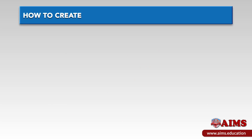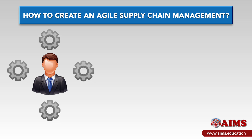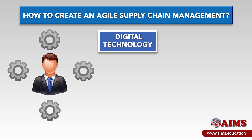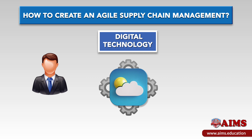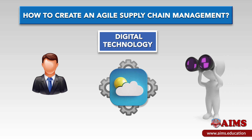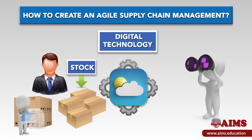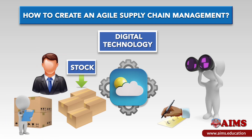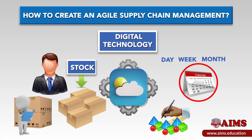How to create an agile supply chain management? You will need to incorporate all the latest tracking techniques provided by digital technology and combine it with forecasts of future demands. This means focusing on what you have in stock, having real-time information on what goes in and what leaves your inventory, and looking at past sales records to see what items are most likely to be in demand depending on the day, week, or month of the year.